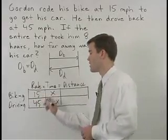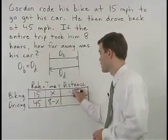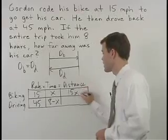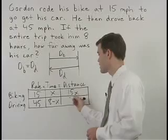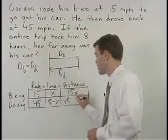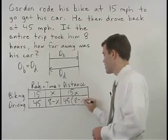So his distance biking would then be 15 times x or 15x. And his distance driving would be 45 times 8 minus x or 45 parentheses 8 minus x.